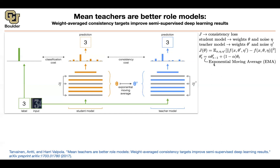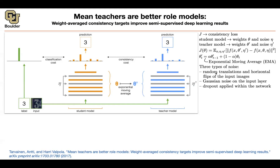Let's first decide what beta prime is. Beta prime is going to be a moving average of the parameters of the student. That's why the name of the paper is Mean Teachers — because that's the average. This is always the average model.